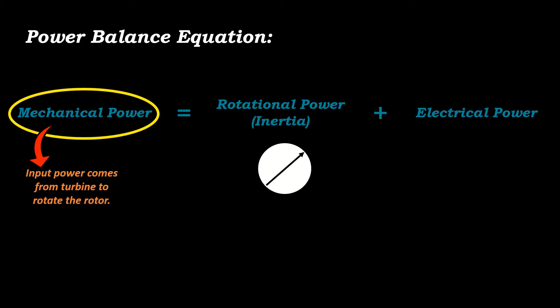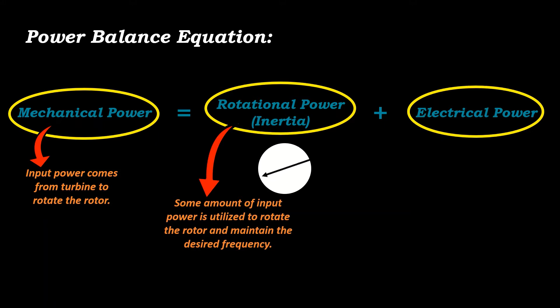This power is used to generate electrical power. However, the amount of input mechanical power must be greater than the electrical load because some amount of power is consumed by rotor to maintain the rated frequency, 50 hertz in Indian system. This additional energy required for maintaining the frequency of system is called rotational energy or inertia.